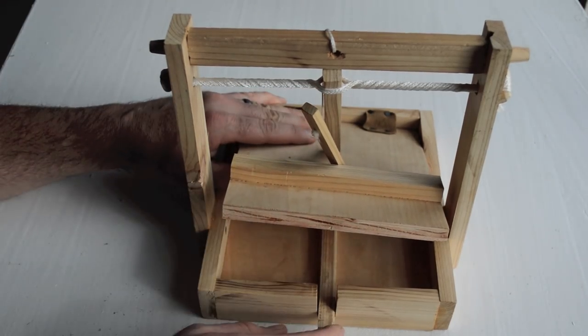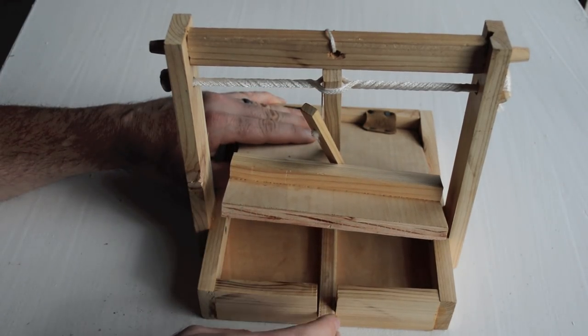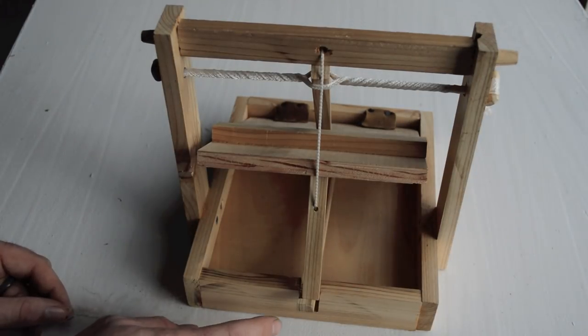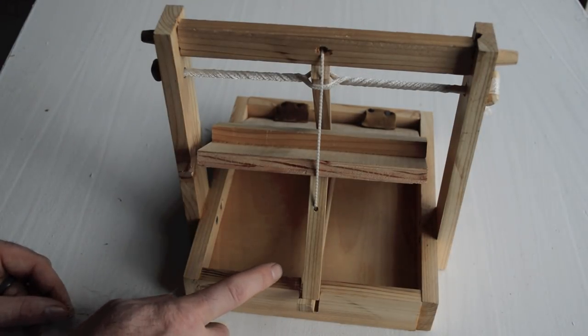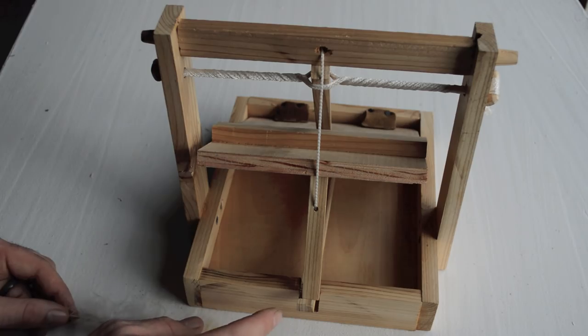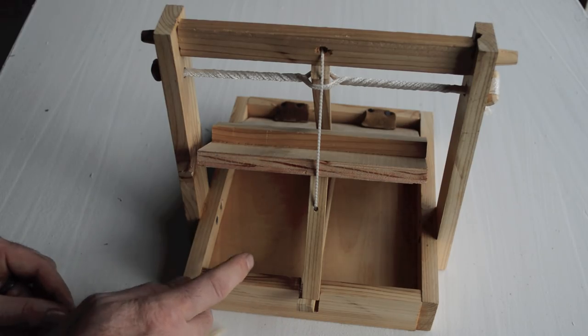I'll set this up again and show you just how sensitive this is. It's incredible. Now obviously a trap like this has to have a light touch so that a mouse will set it off. If it's too rigid and firm, the mouse will take your bait and not get caught.